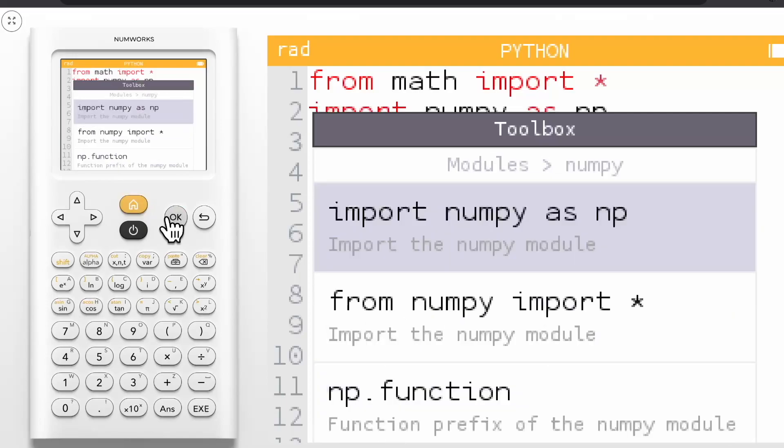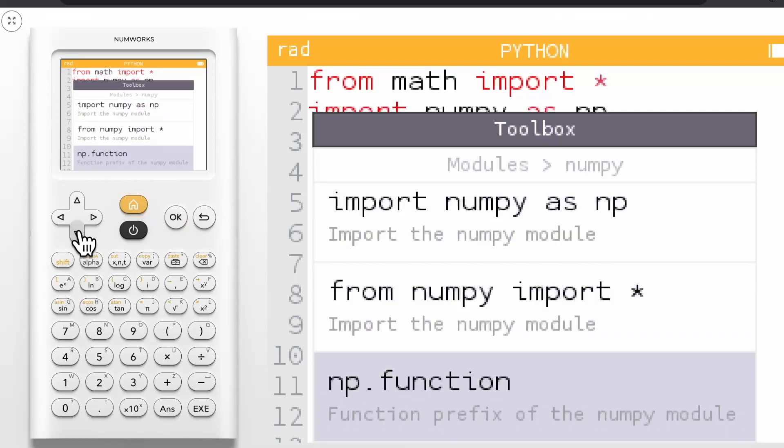To use the NumPy version of a function, select NP.function or you can alternatively type NP.